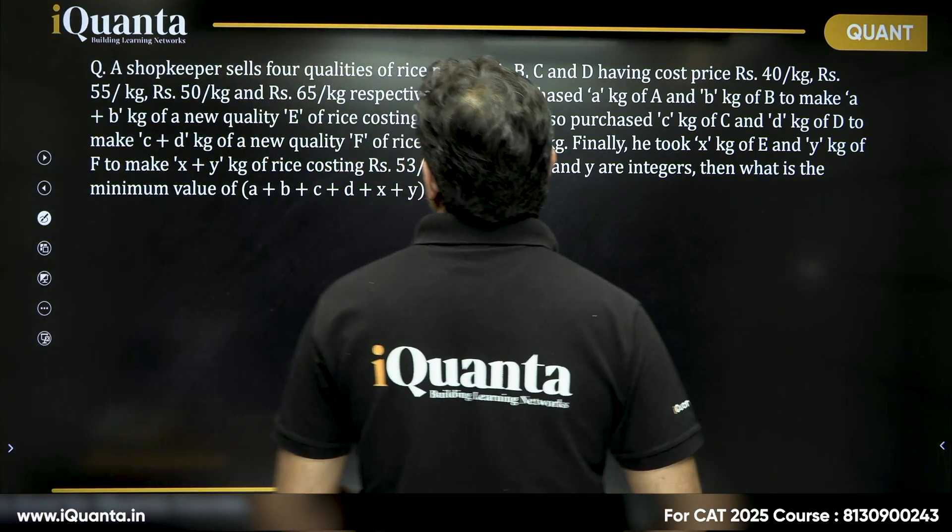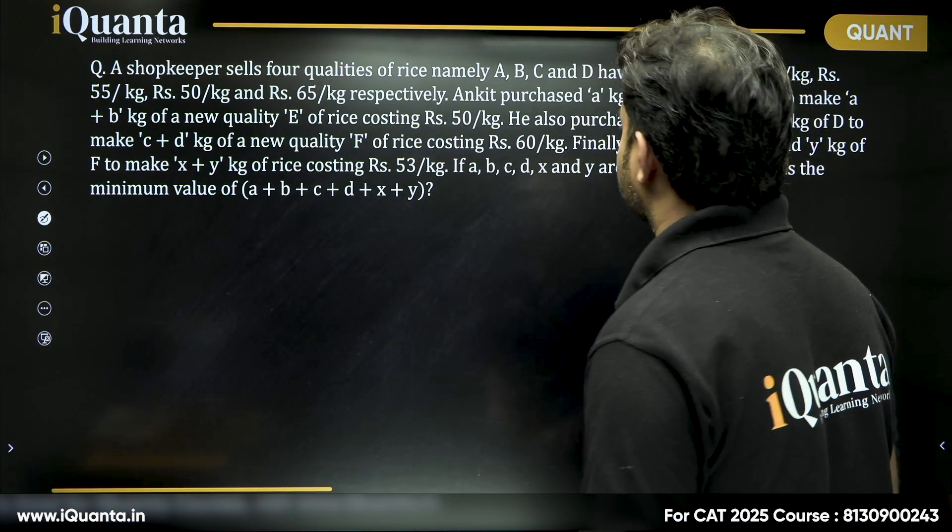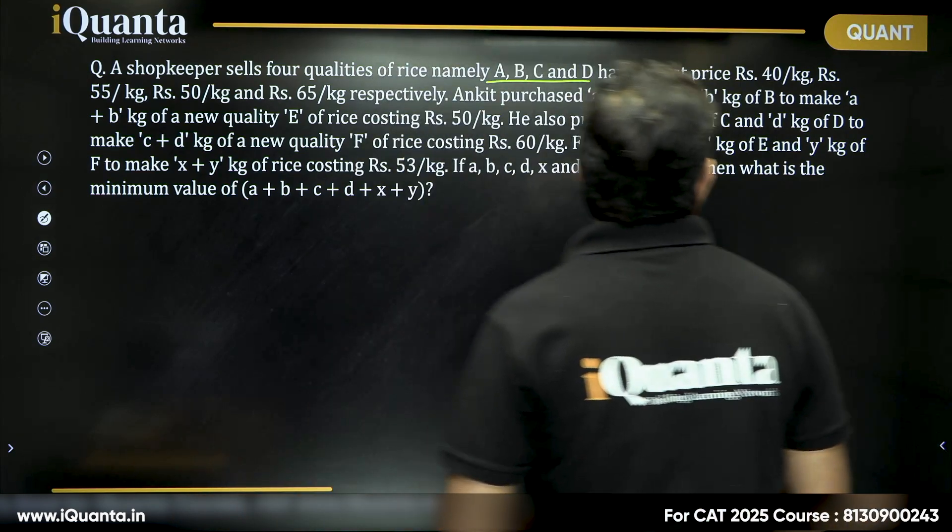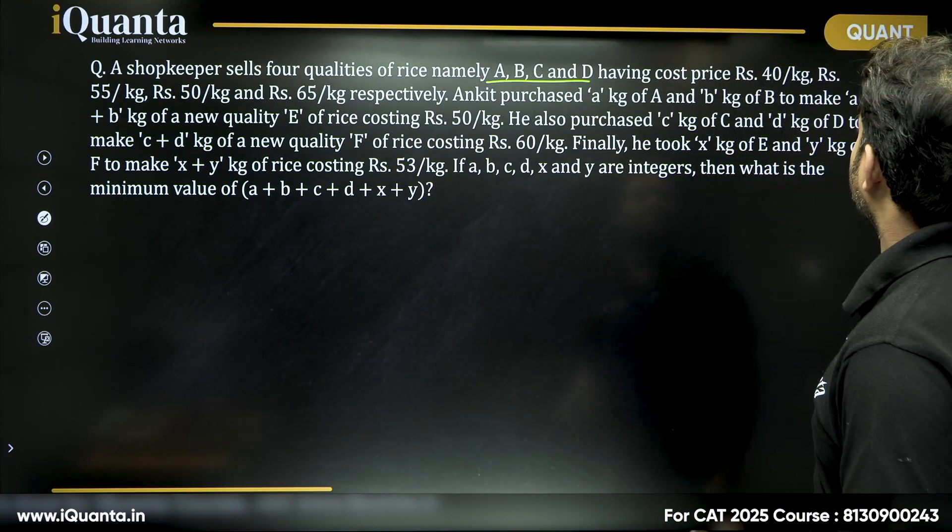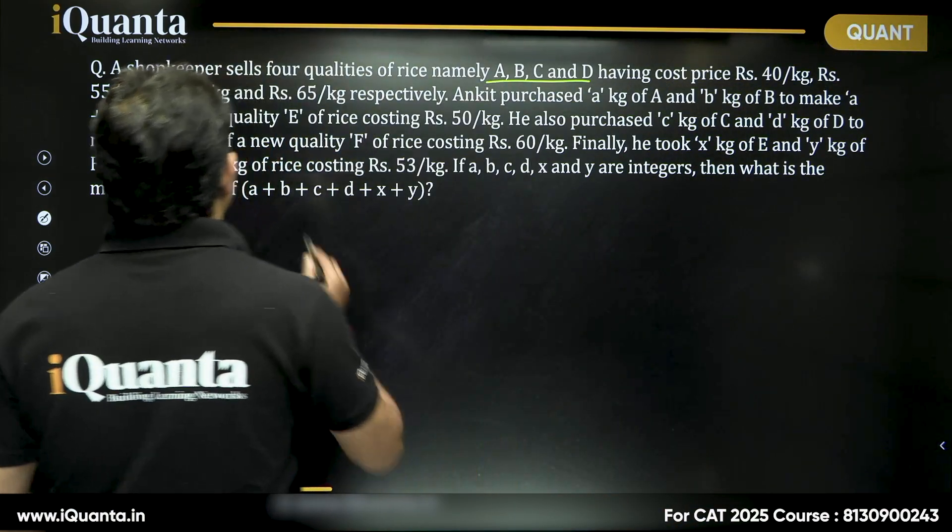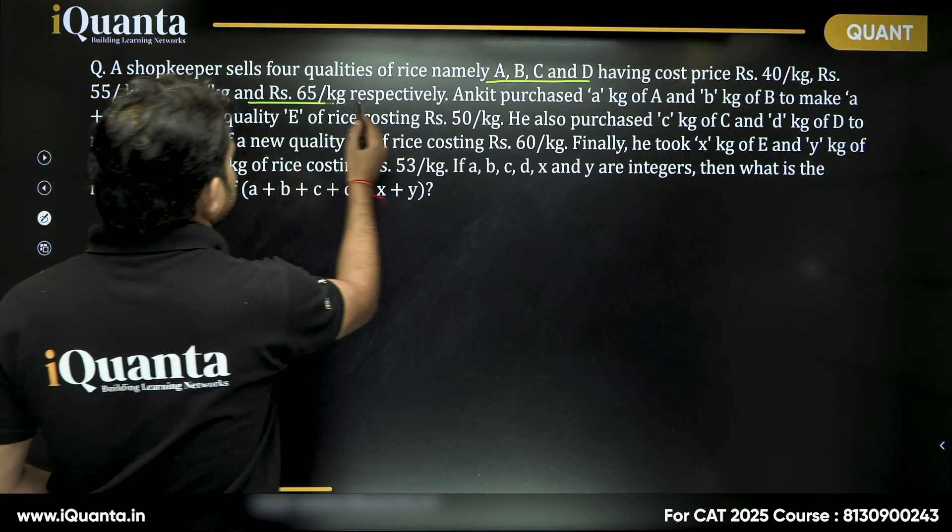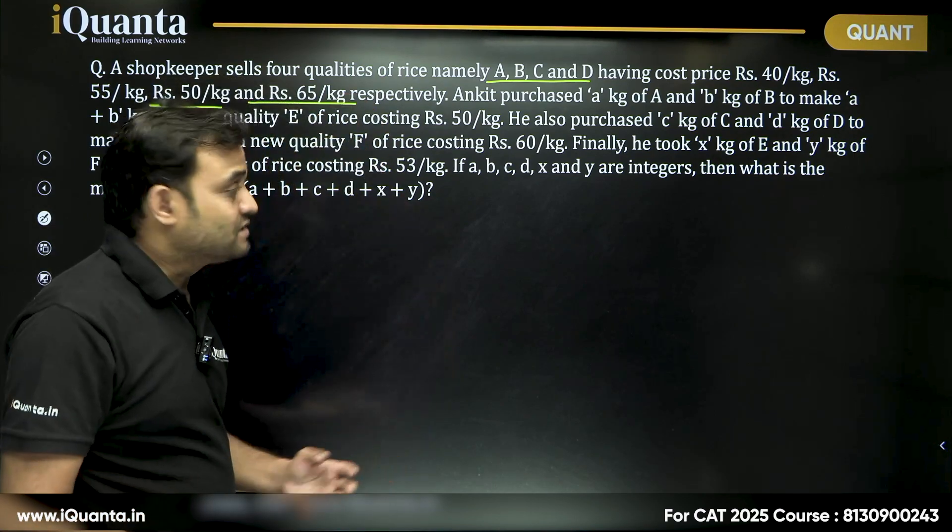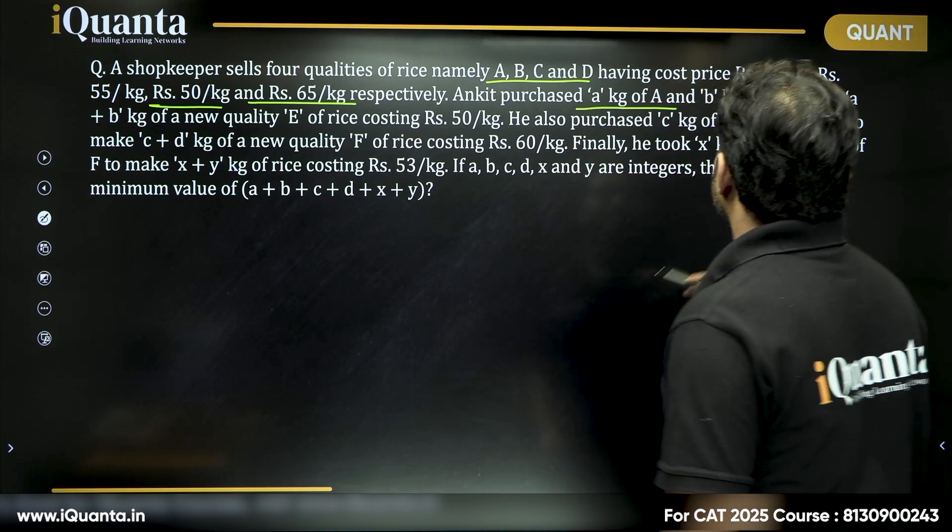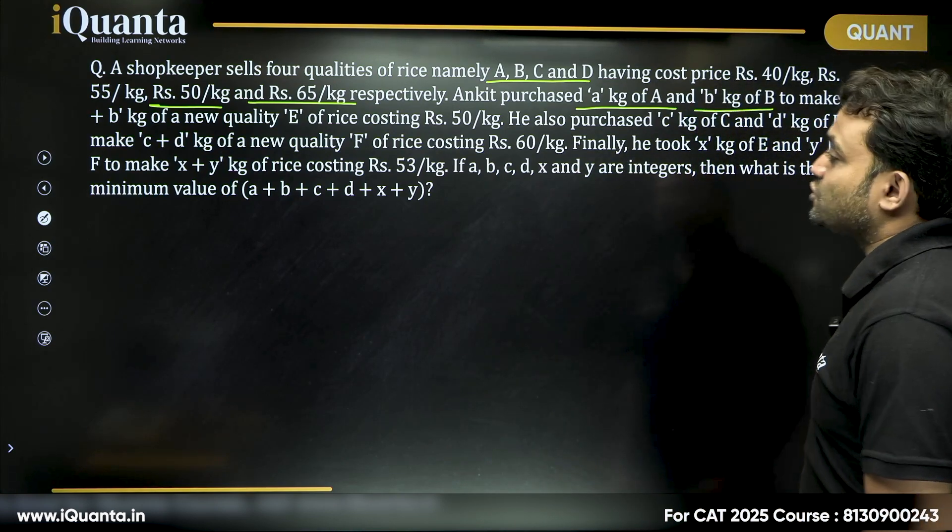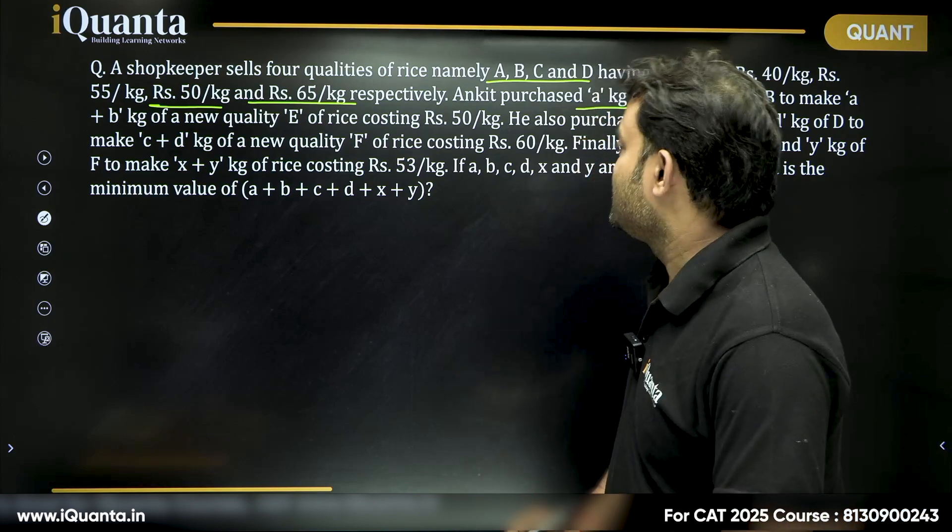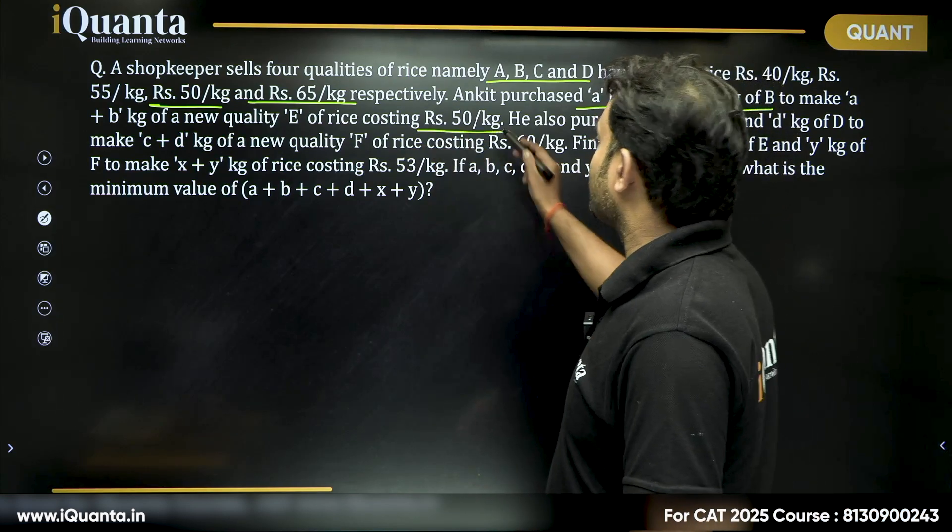A shopkeeper sells four quantities of rice, namely A, B, C and D having cost price Rs. 40/kg, Rs. 55/kg, Rs. 50/kg and Rs. 65/kg respectively. Ankit purchased a kg of A and b kg of B to make a+b kg of a new quality E of rice costing Rs. 50/kg.